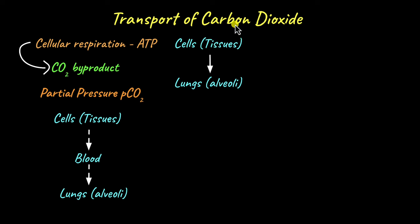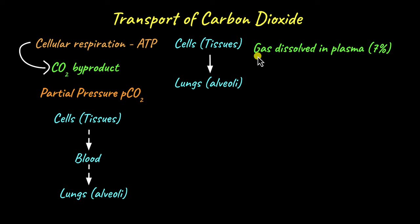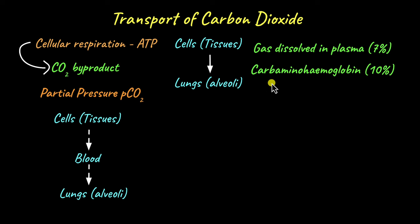So what is the mechanism by which carbon dioxide is transported in the body? Unlike oxygen, where only one mechanism is involved — binding to hemoglobin in the red blood cells — carbon dioxide is moved by three mechanisms. The first mechanism is in the form of gas dissolved in plasma; about 7% of total carbon dioxide is transported this way. The next mechanism is in the form of carbaminohemoglobin, which involves hemoglobin, and around 10% of carbon dioxide is transported this way.